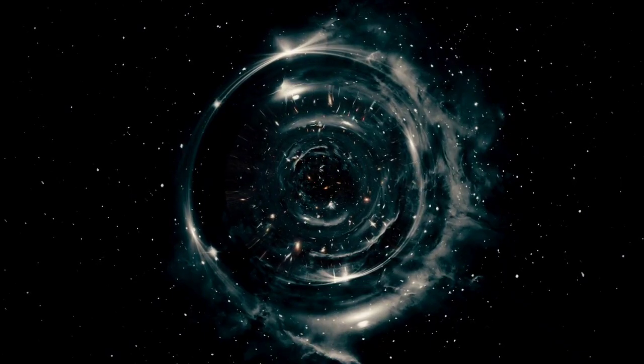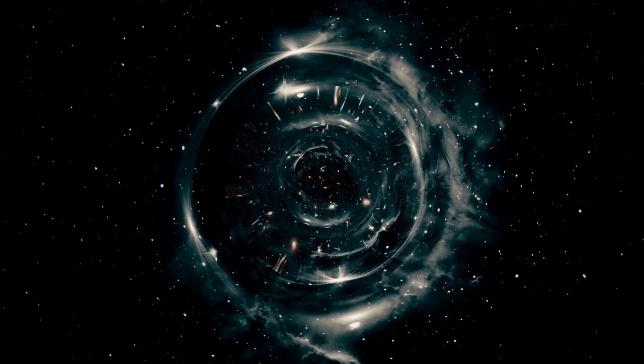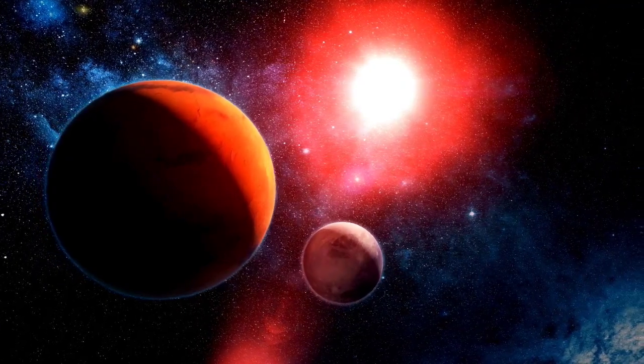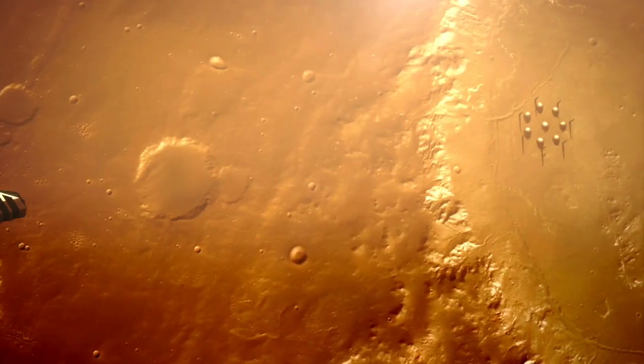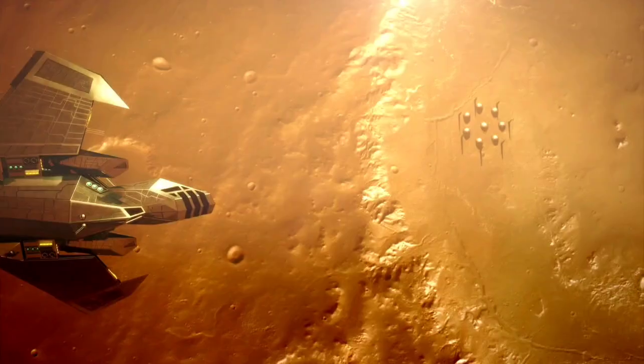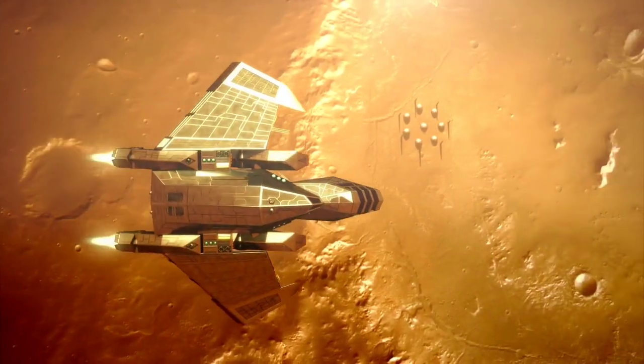The analyst ran the combined data through pattern recognition software and uncovered something chillingly precise: a mathematical map of our solar system, showing planetary orbits and one extra point just beyond Mars, exactly where 3i Atlas was now.